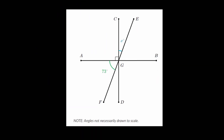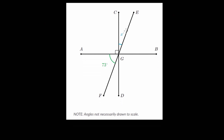Let's do one more example. Here we're trying to find angle CGE, which is angle x. We're told that angle AGF is 73 degrees, and angle CGA is a right angle. Notice that this angle plus the right angle plus angle x, when combined, form a straight line FGE, and we know a straight line is 180 degrees.